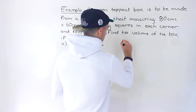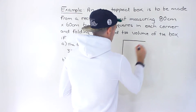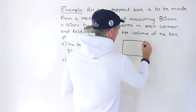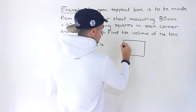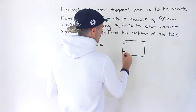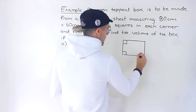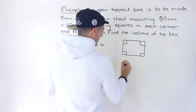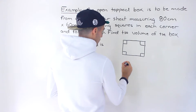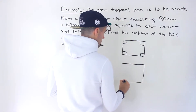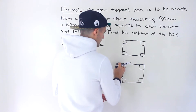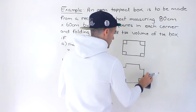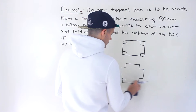Now the way this works, if you've never run into a question like this before, is we're going to be taking a rectangular sheet like this. We're going to be cutting squares in each corner — we would cut these squares out — and what would happen after is we'd end up with these squares cut from each corner like that.